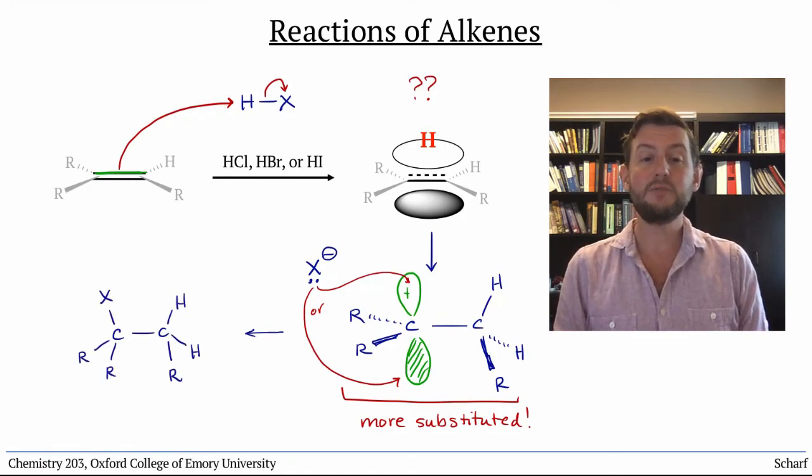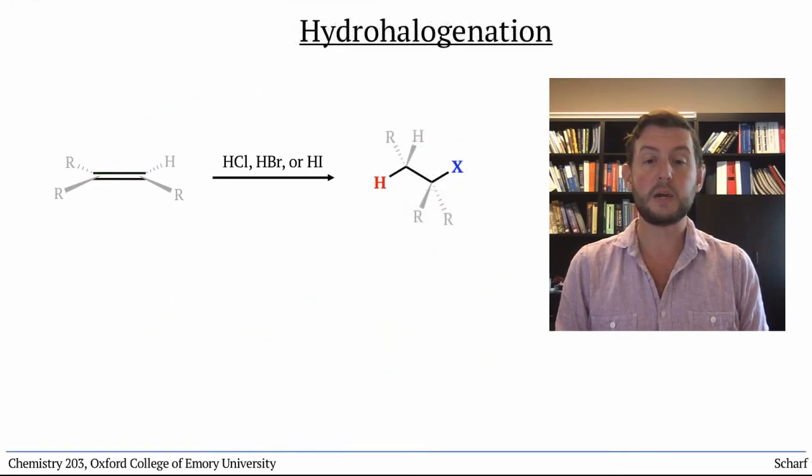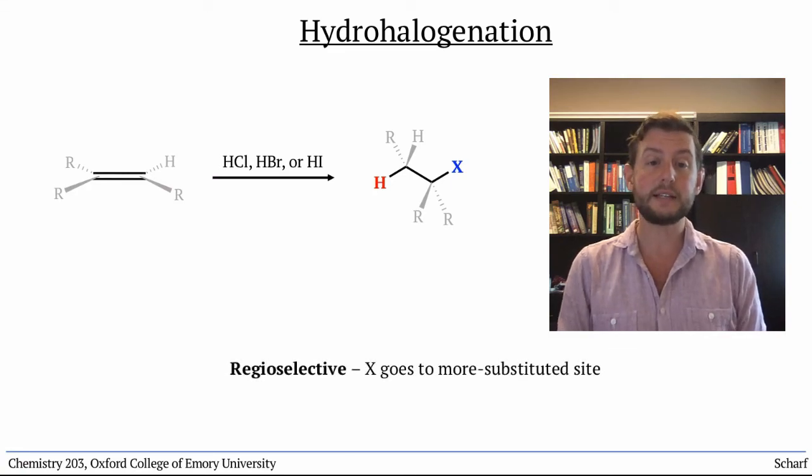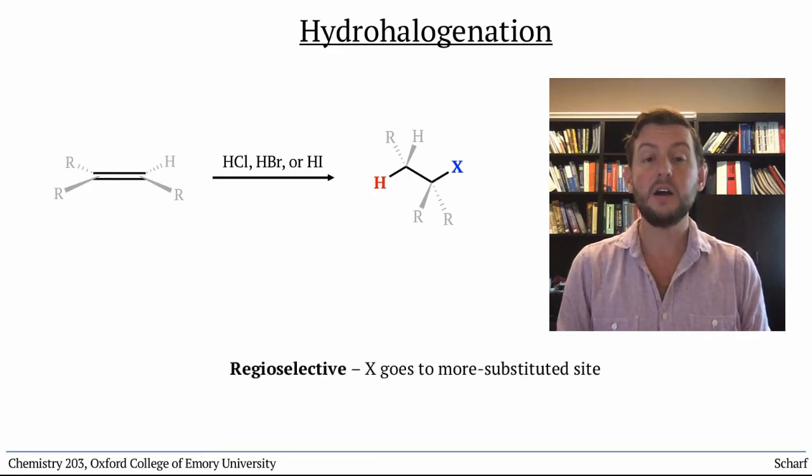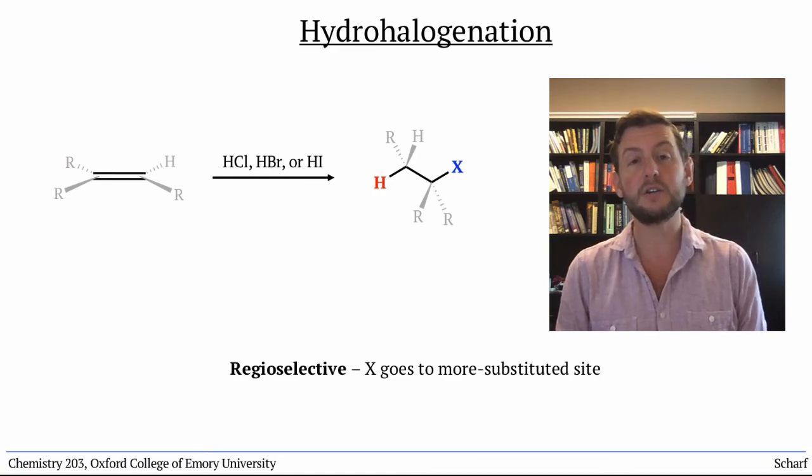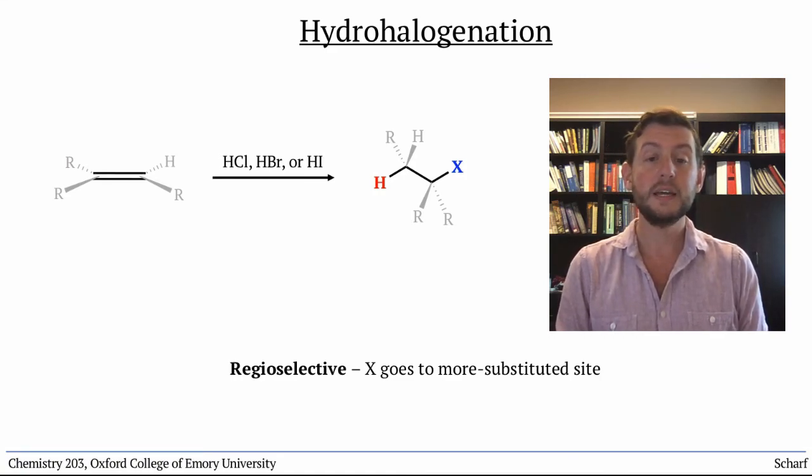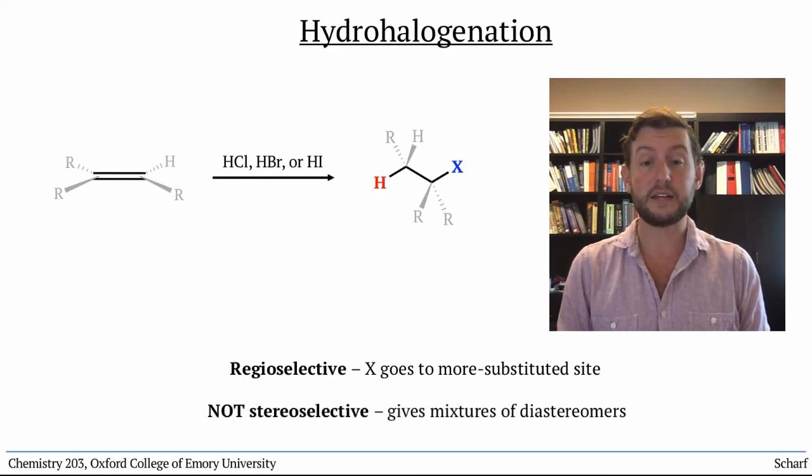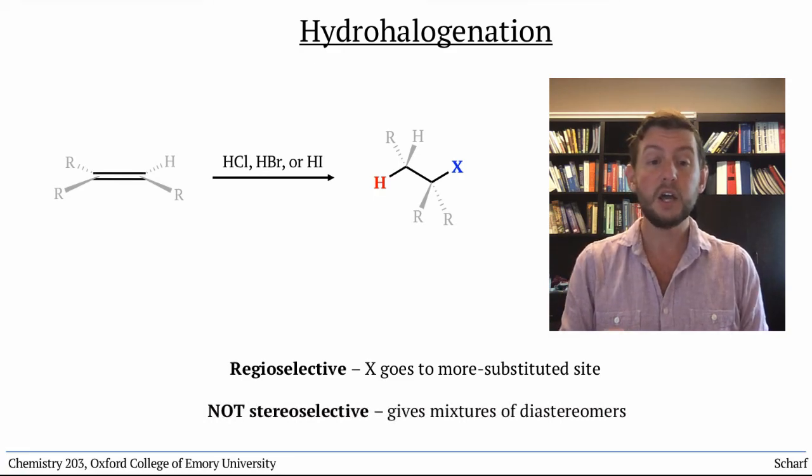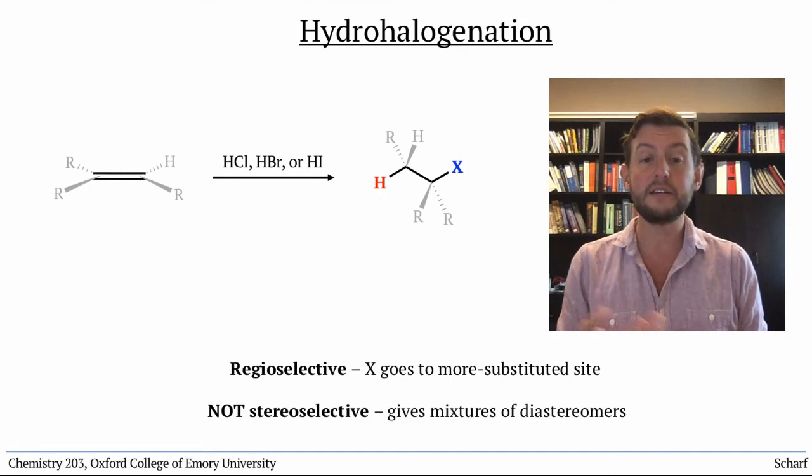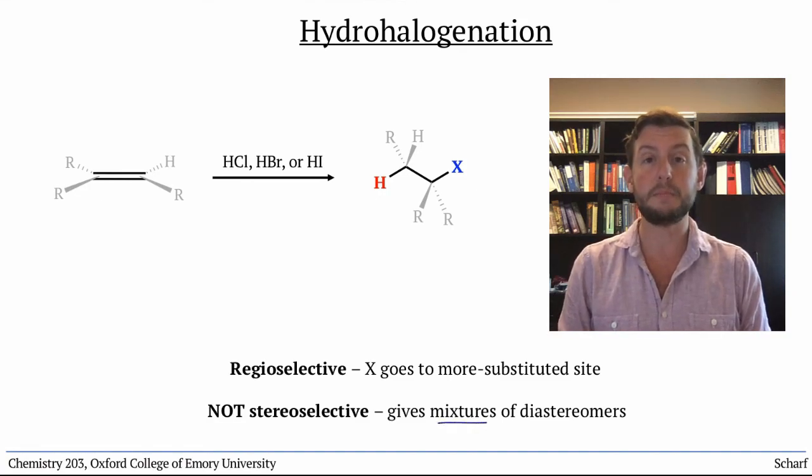This reaction is called hydrohalogenation, between an alkene and a hydrohalic acid, and is regioselective. It puts the halogen on the more substituted carbon of the alkene and a hydrogen on the other carbon. It's not stereoselective, though, because the halogen could add to either side of that carbocation's empty P orbital.